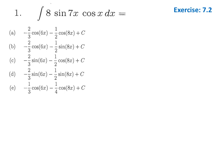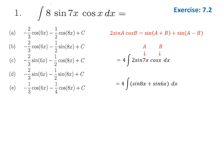Here we have to solve a trigonometric integral. The two functions do not have the same angle, so we need the trigonometric identity: 2·sin(a)·cos(b) = sin(a+b) + sin(a−b). Here a = 7x and b = x, so we plug into the formula and integrate sin(8x) and sin(6x).